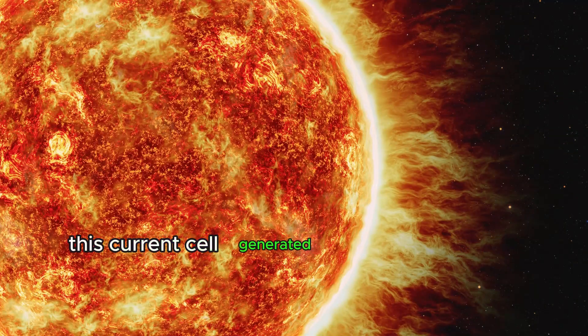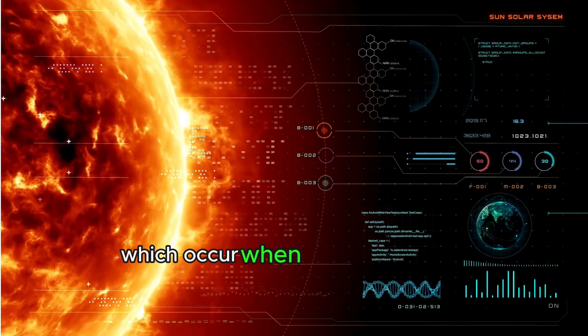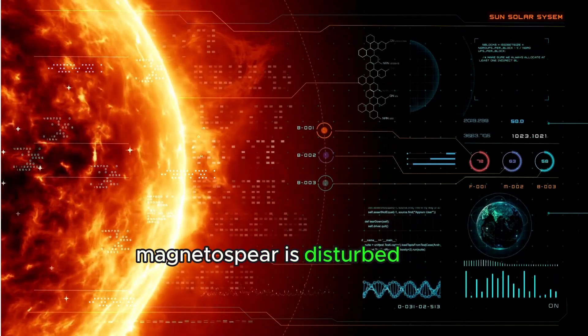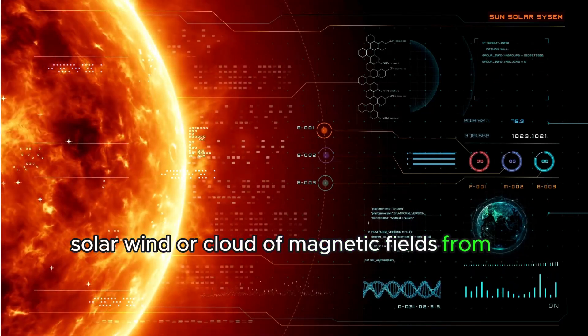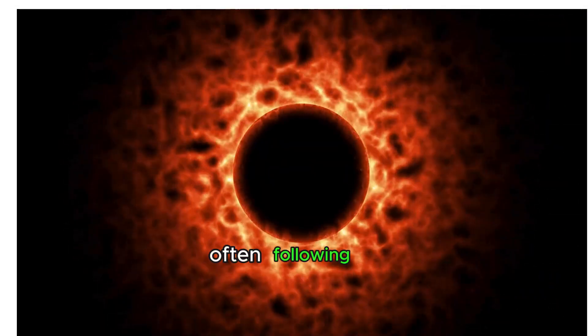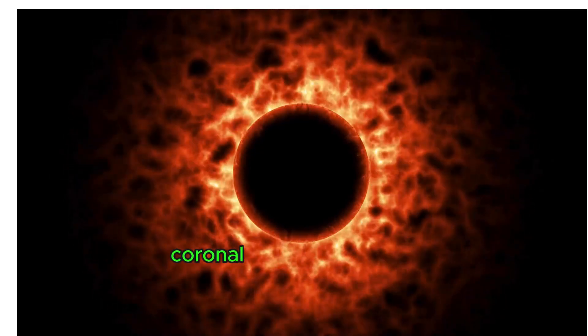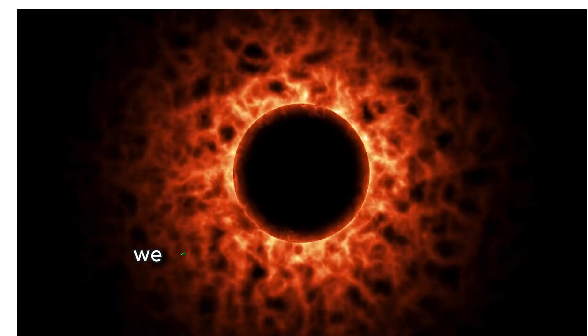These currents are generated during geomagnetic storms which occur when the Earth's magnetosphere is disturbed by the solar wind or cloud of magnetic fields from the Sun, often following a solar flare or coronal mass ejection (CME).